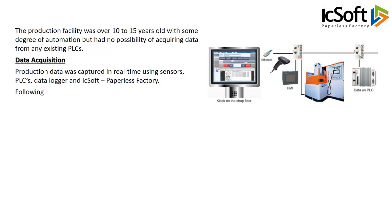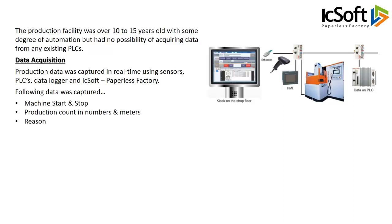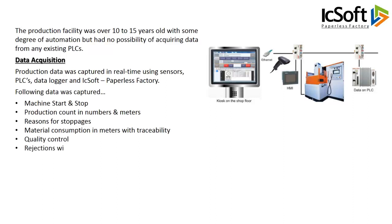The following data was captured: machine start and stop, production count in numbers and meters, reasons for stoppages, material consumption in meters with traceability, quality control, and rejections with reasons. The data was stored in the ICSoft MES.